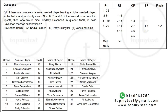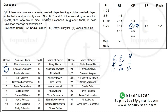Question one says: there are no upsets in the first round, and only matches 6, 7, and 8 of the second round result in upsets. Who would meet Lindsay Davenport in the quarterfinal, given that Davenport reaches the quarterfinal? Davenport is ranked two, so in the quarterfinal she is expected to meet the person ranked seven. In round two, matches 6, 7, and 8 result in upsets, so instead of seed 8, seed 9 advances; instead of seed 7, seed 10 advances; instead of seed 6, seed 11 advances. So seed 10 takes seed 7's place in the quarterfinal. Seed 10 is Venus Williams — option four is the correct choice.